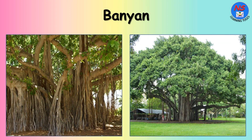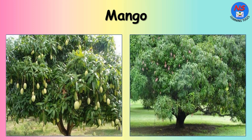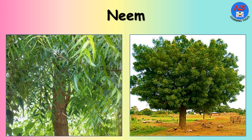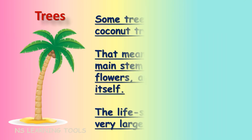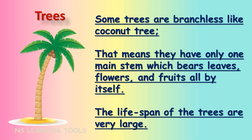Banyan trees are ones that mature into thick woody trunks. Mango trees have very thick woody and hard stems. Neem tree stems give rise to many branches. Some trees are branchless, like the coconut tree — that means they have only one main stem which bears leaves, flowers and fruits all by itself.